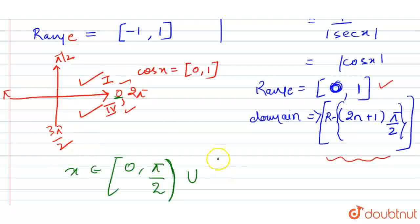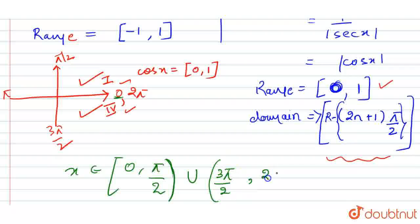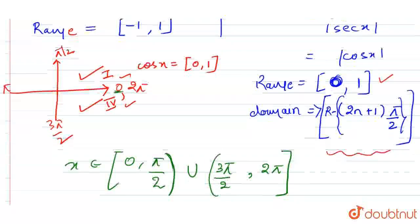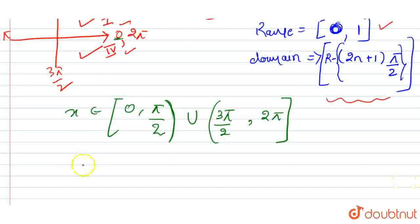The second interval will be from 3 pi by 2 to 2 pi. We cannot include odd multiples of pi by 2, so 3 pi by 2 has an open bracket, to 2 pi with a closed bracket: (3π/2, 2π]. Because at pi by 2, tan theta becomes undefined and we don't want that.